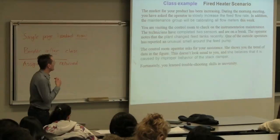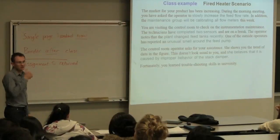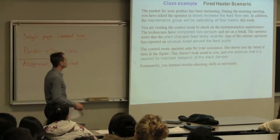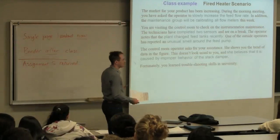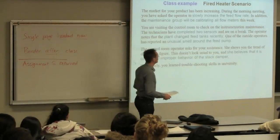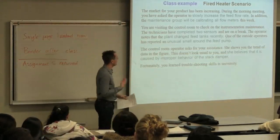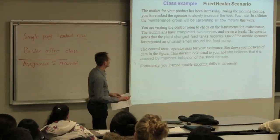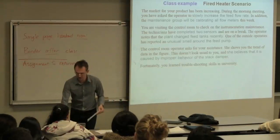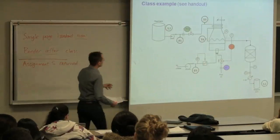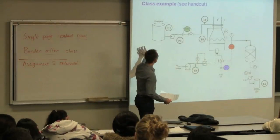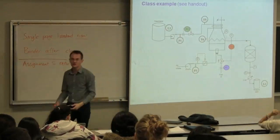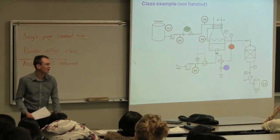In addition, the maintenance group is currently calibrating all flow meters this week. Work on the plant is happening at the same time. You're in the control room to check up on this maintenance. Two technicians have been working on this. They've completed two of the sensors and they've gone on break. The operator tells you that the plant has changed feed tanks recently. By that we mean we have a second or third storage tank and we've switched from one tank to the other.